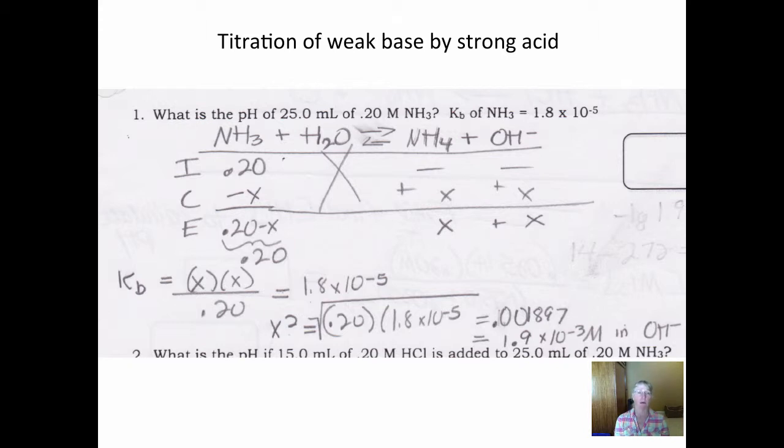So we've got this ammonia dissolved in water. It's going to undergo a little bit of hydrolysis. So we need to find the hydroxide ion concentration at the end from which we could find hydrogen, from which we can find pH. So we don't even need the 25 milliliters. We basically need the 0.2 molar initial concentration of the ammonia.